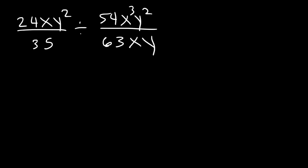Here's another problem that you could try. Divide 24xy squared over 35 by 54x cubed y squared over 63xy. So the process is the same. The only difference is that we have more variables to deal with and larger numbers. So for the sake of practice, go ahead and work on this example.